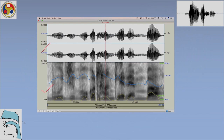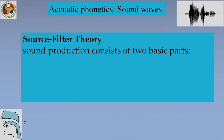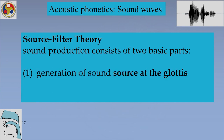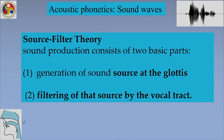Before returning to those different types of representation, I want to first discuss something very basic to understanding how we hear sounds: the source filter theory of sound production. It holds that sound production consists of two basic parts — the generation of source sound at the glottis, and the filtering of that sound by the vocal tract. These two parts play a very important role in understanding speech sounds.